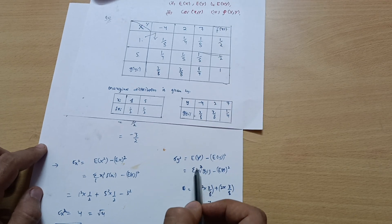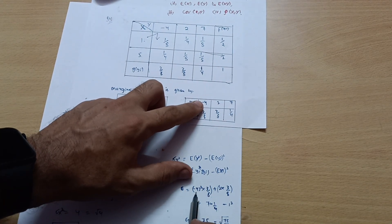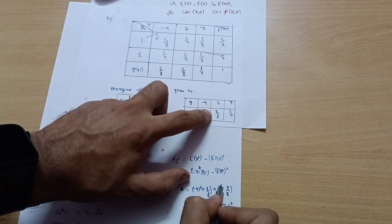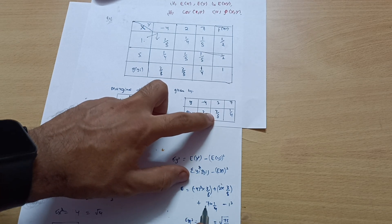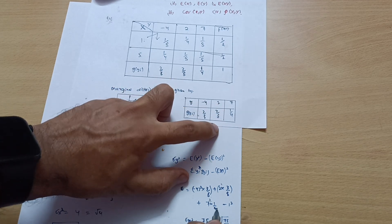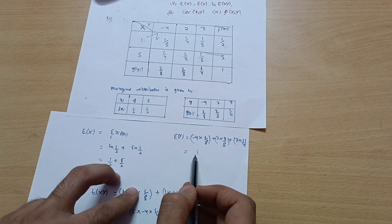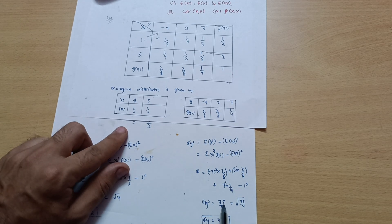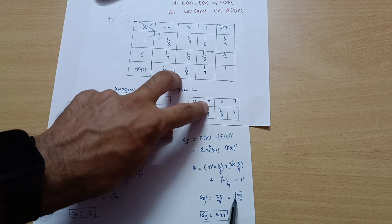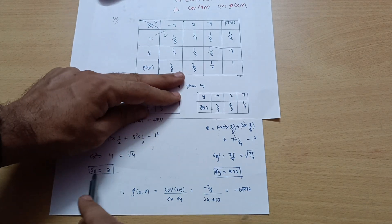Similarly, σ²(Y) = Σ yᵢ² · g(yᵢ) − [E(Y)]². That is (-4)² × 3/8 + 2² × 3/8 + 7² × 1/4 − 1² = 75/4. So σ(Y) = √(75/4) ≈ 4.33.